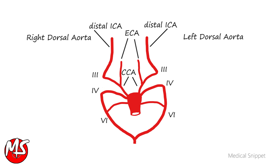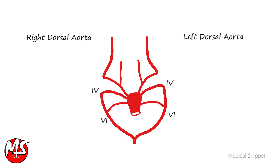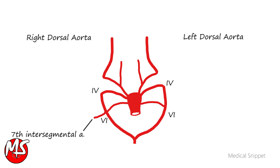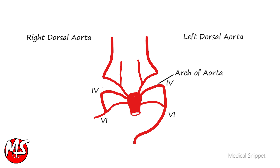The right fourth aortic arch forms the proximal part of the right subclavian artery. Its distal part is formed by a portion of the right dorsal aorta and the seventh intersegmental artery. The right dorsal aorta caudal to the seventh intersegmental artery disappears.